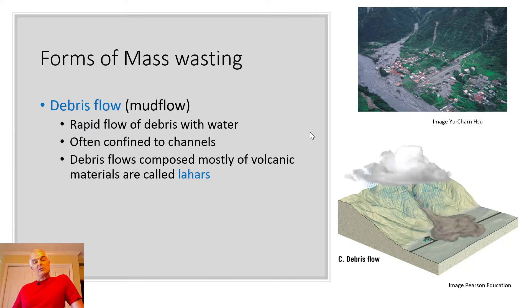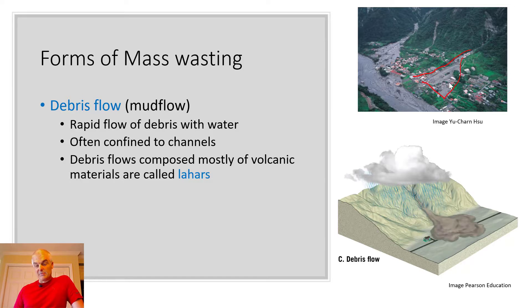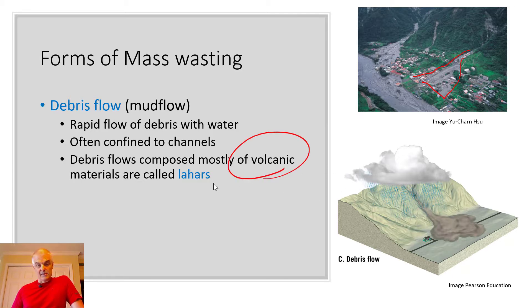And then a debris flow — this is the rapid flow of debris with water, often confined to channels. You get a channel and then you get this flow. These can be very devastating. This is somewhere in China, and people were buried. It can be scary things. And sometimes it happens with volcanoes, and they make something called a lahar. We'll talk about that when we talk about volcanoes, which is pretty cool too.